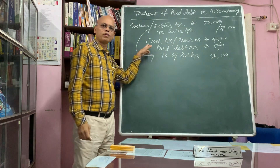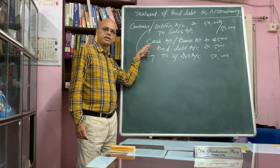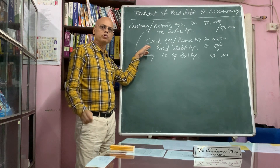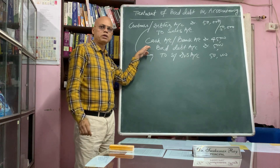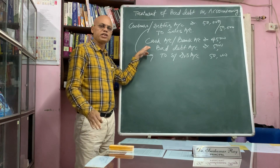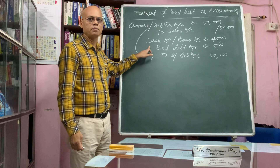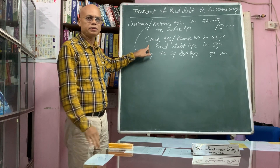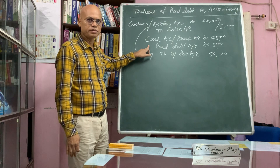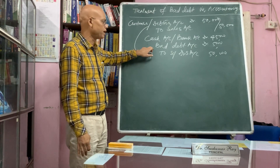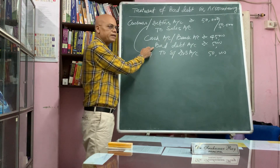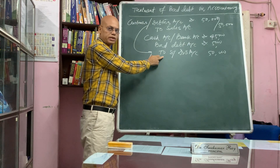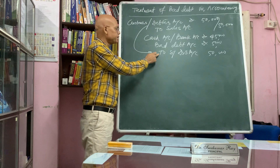In general, in the year in which goods have been sold, bad debt usually occurs in the next accounting year. But whatever the case may be, bad debt account will be debited because bad debt is a loss, and the debtors account value is decreasing due to bad debt.